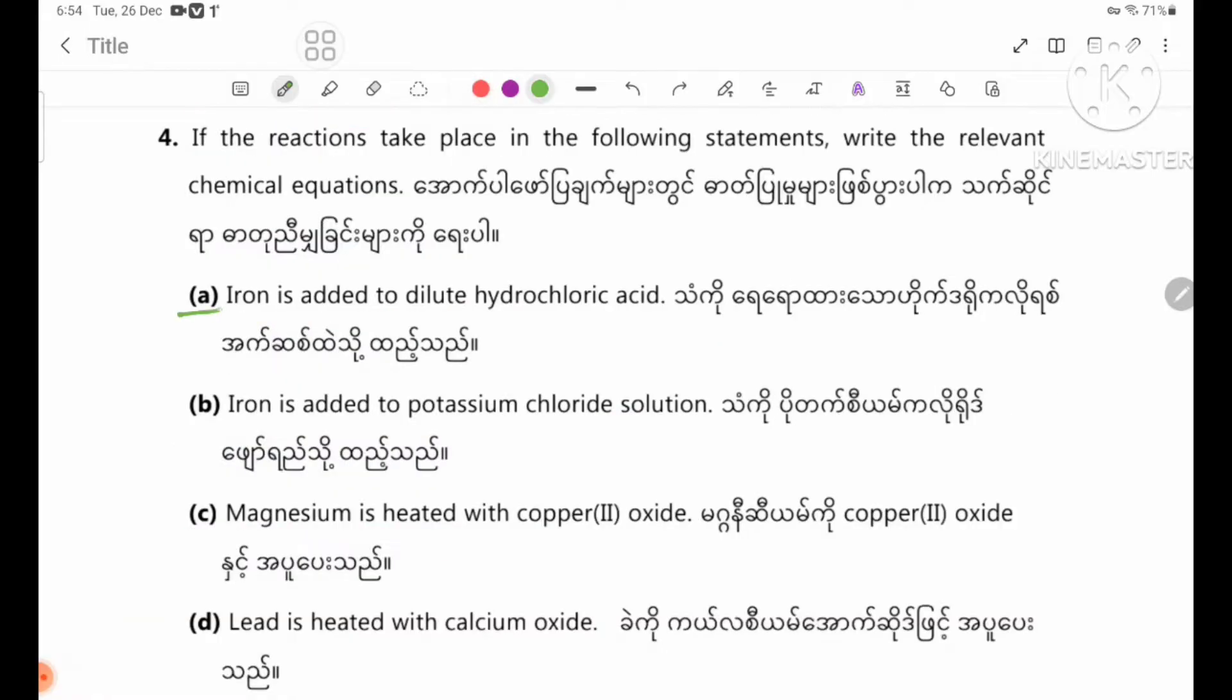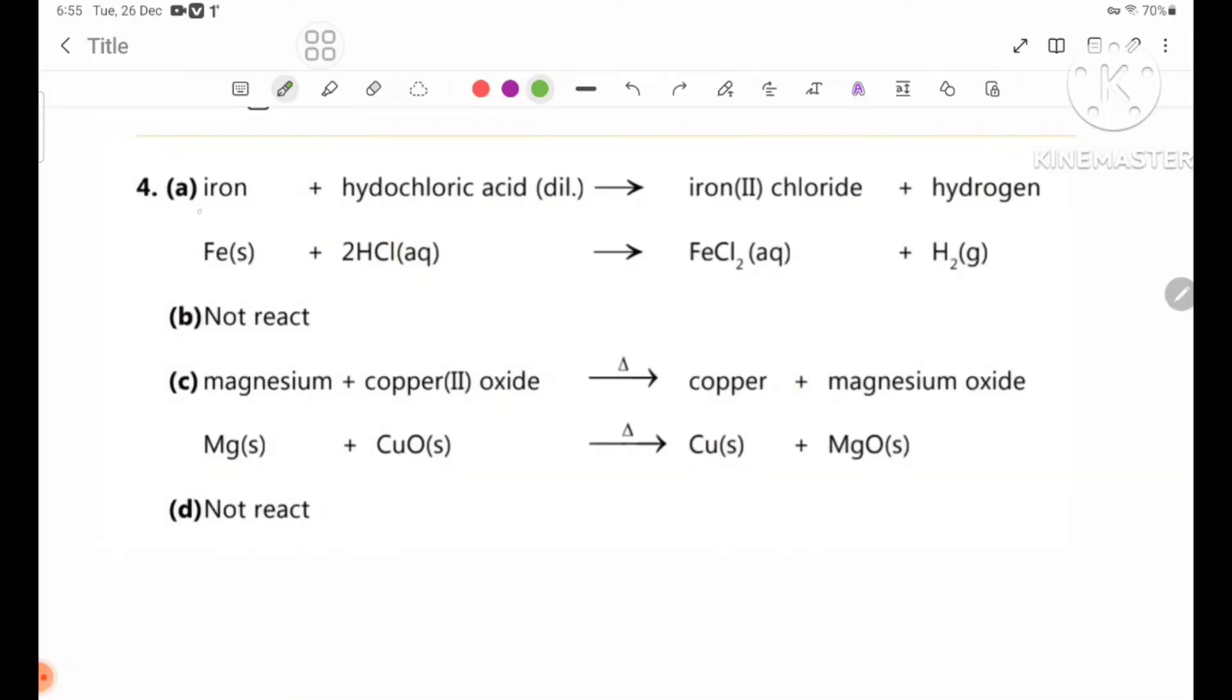Number A: Iron plus dilute hydrochloric acid. The reaction equation is Fe solid plus HCl aqueous forms FeCl2 aqueous plus H2 gas.